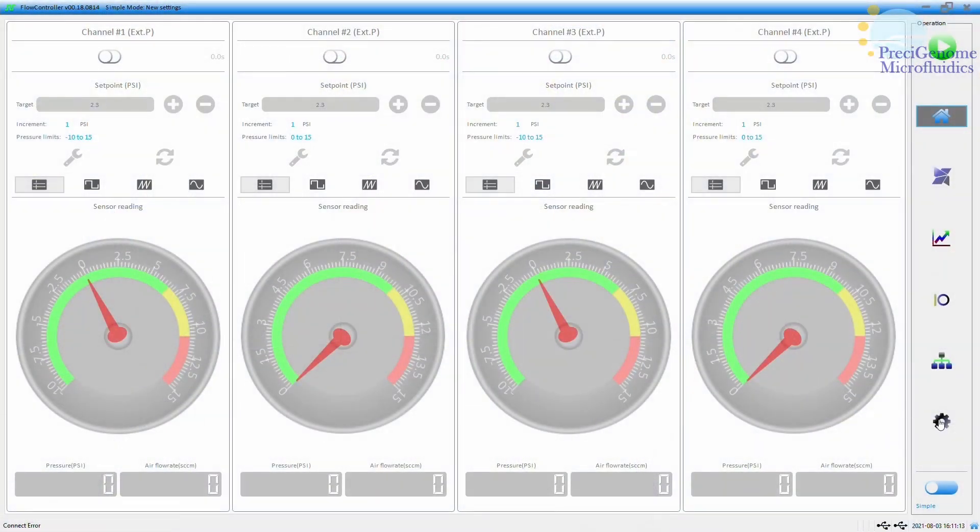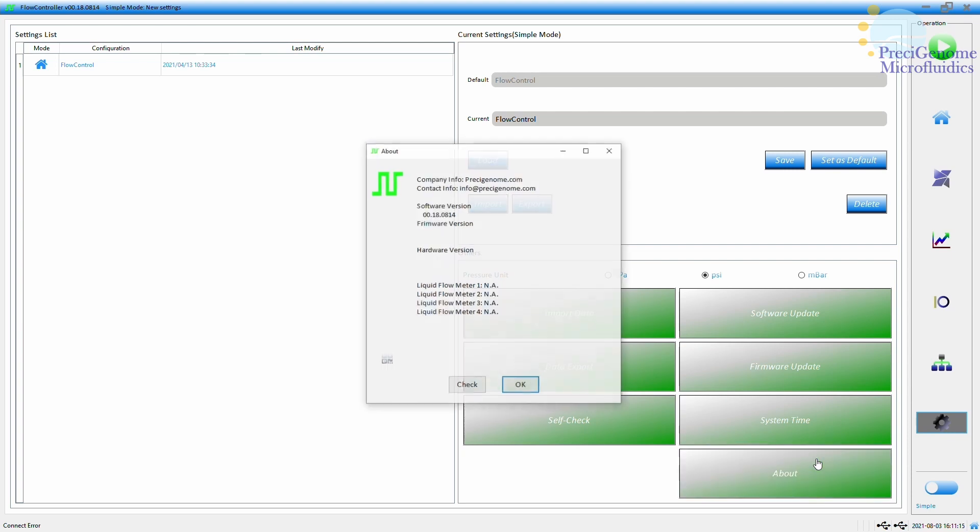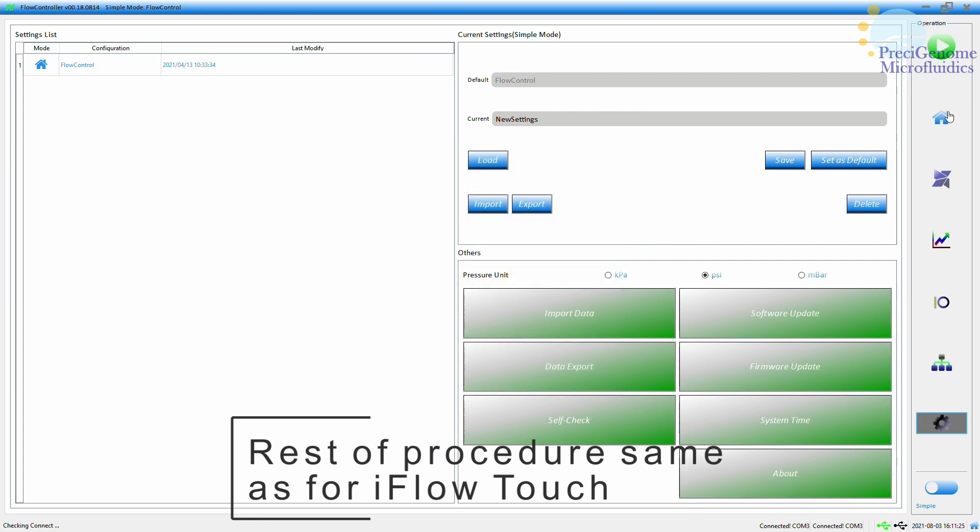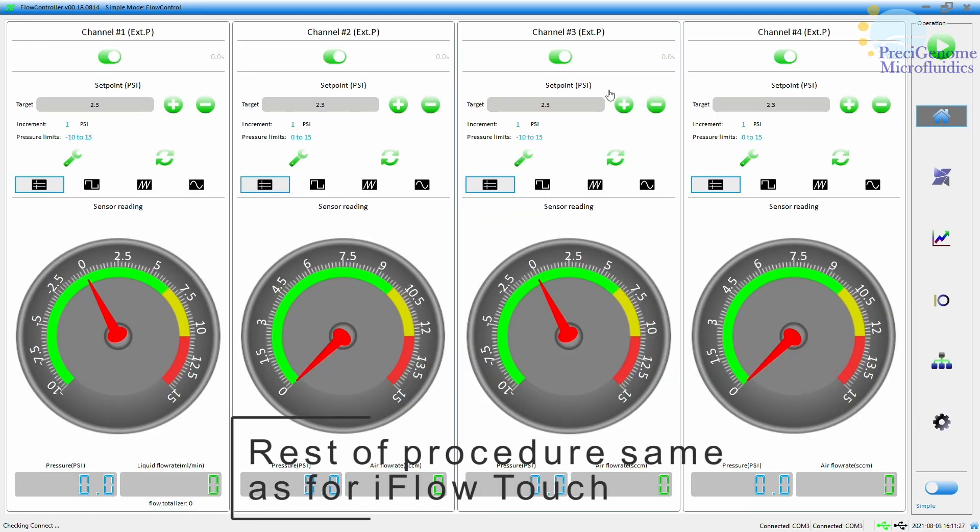In the Flow Controller app, go to Settings, About and Check. The rest of this procedure is the same as for the iFlow Touch, so please see its software tutorial.